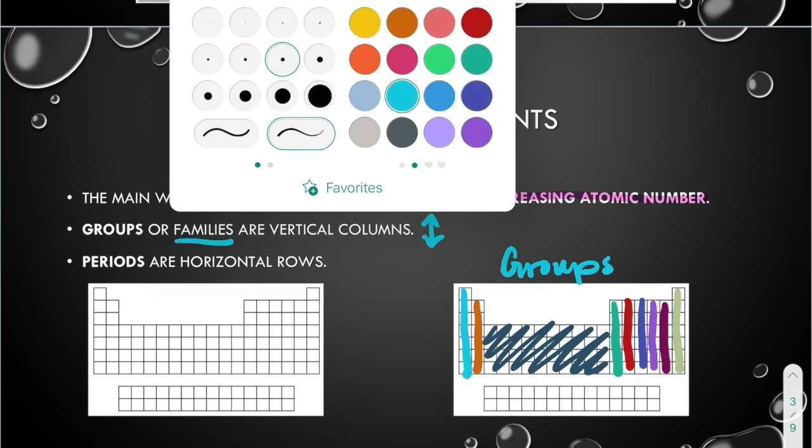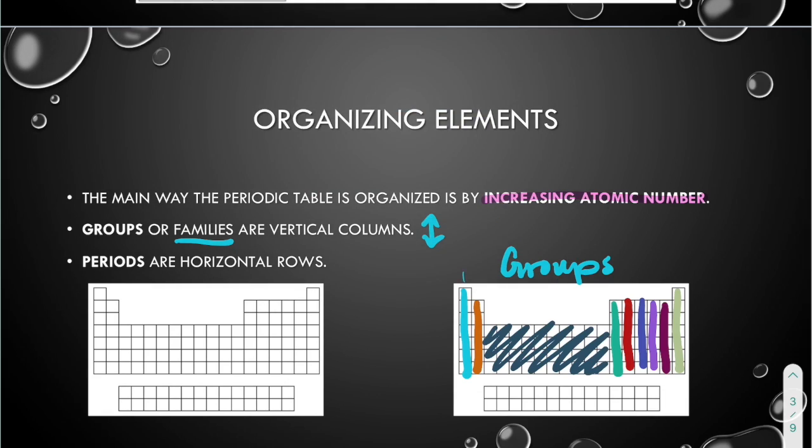For the groups, you number them across the top. So we said this is group one, this is group two. Three through twelve are there in the middle, so that's why it jumps to thirteen above boron. And then it goes, you count over, this is eighteen on the last one. So thirteen, fourteen, fifteen, sixteen, seventeen, and eighteen. So they get numbered across the top, but they're vertical columns. Groups go up and down.